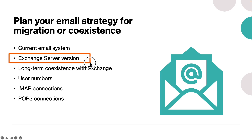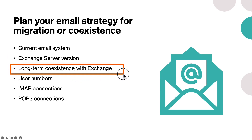The second consideration is Exchange server versions. If the organization runs Exchange server on-premises, the version of Exchange provides guidance on migration options available. If it runs Exchange 2000 or earlier, then IMAP, PST, or third-party tools are valid options. If it runs Exchange 2003 or later, there are options for a cutover or staged migration. A hybrid configuration is also an option, but only if the organization has at least Exchange 2010.